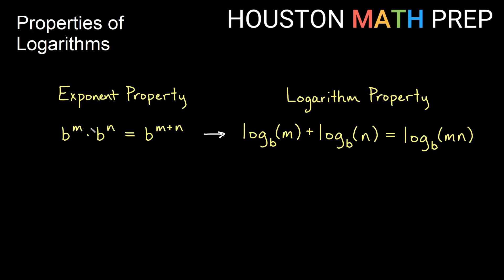So with separate exponentials, multiplication becomes addition in a single exponential. And with separate logarithms, addition between the logarithms becomes multiplication inside a single logarithm. The short way to think of it: multiply becomes add for exponents, and add becomes multiply for logarithms.